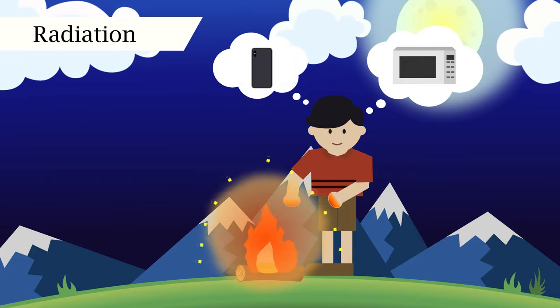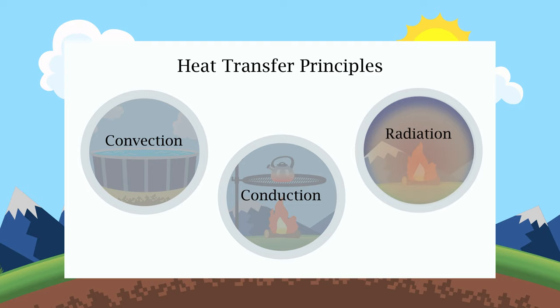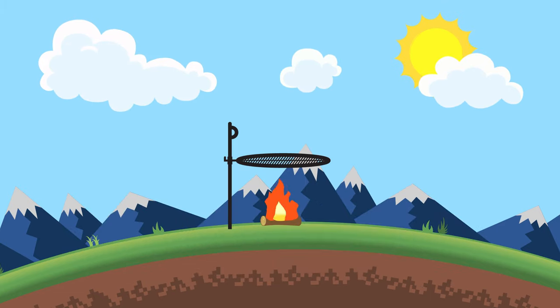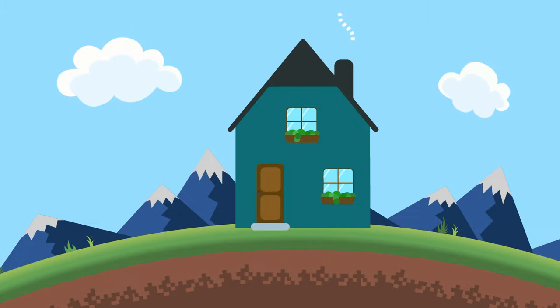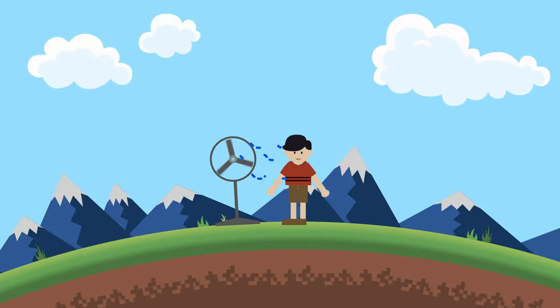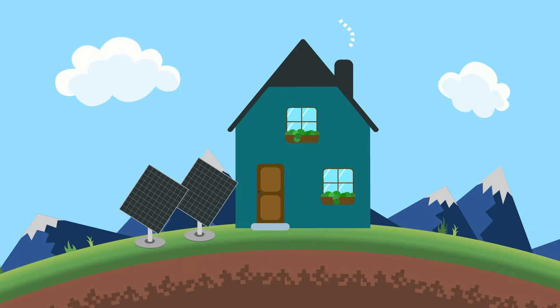Conduction, convection, and radiation are three critical ways heat moves through our lives. They're the heat transfer principles we experience every day. Knowing how heat transfers makes it easier to find efficient ways to warm and cool our houses, keep people safe from overheating, and create new and innovative technologies to improve our lives.